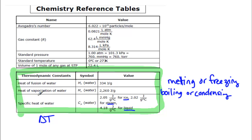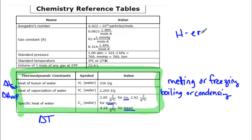You might see these written as delta H_FUS or delta H_VAP. H is a fancy word for energy — we say enthalpy. So fusion refers to heat of fusion of water, and vaporization refers to heat of vaporization.